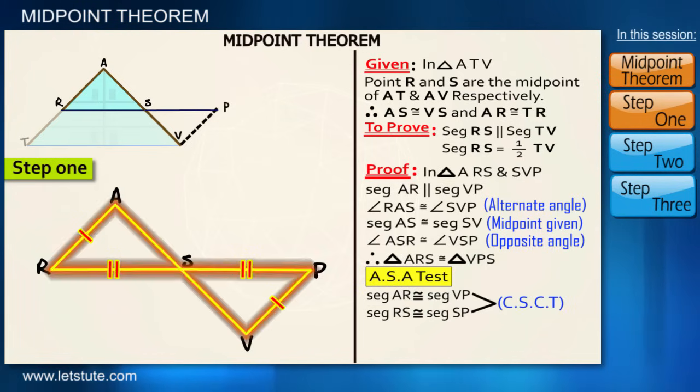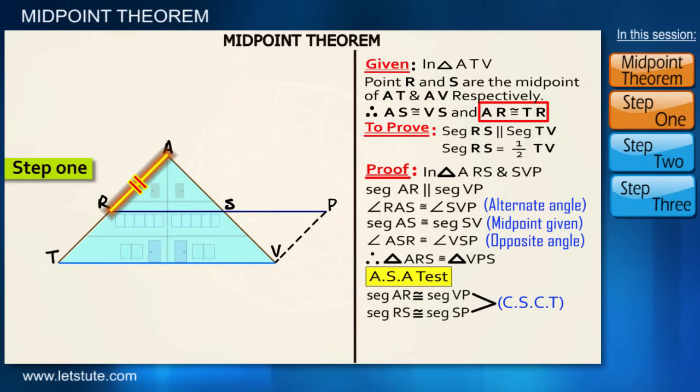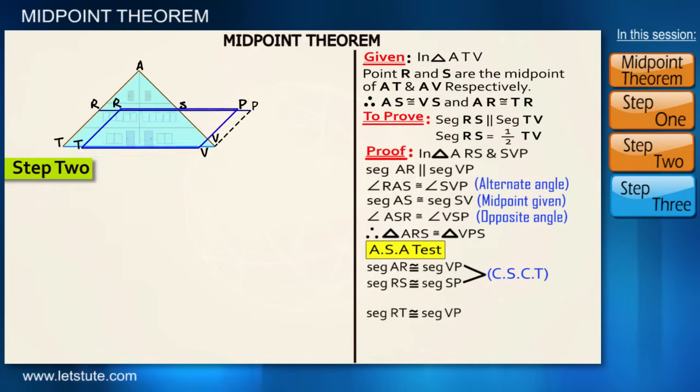We know that AR is congruent to RT, and we just proved that AR is also congruent to VP. Therefore we can say that RT is also congruent to VP. Now the step number two.